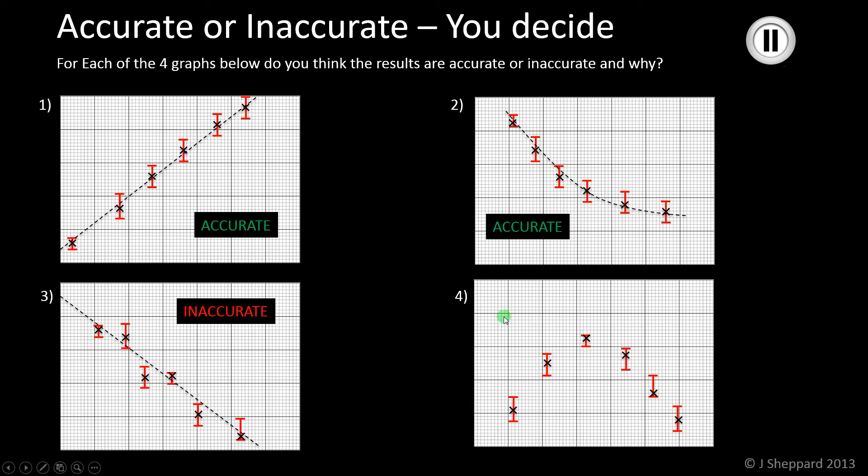Number four, yes, it's an unusual trend to go up and then down again, but it is still a smooth curve we can put through those points. So you would still say those are accurate, even though the trend is slightly unusual. Hopefully that's helped you with accuracy. Do watch the other videos to make sure you're happy with the other terms for your data analysis.